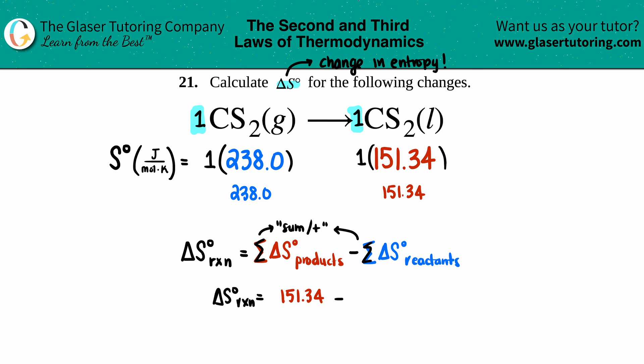...minus the reactants of 238.0. Let's see what we get. Delta S for the whole entire reaction is 151.34 minus 238. It's a negative value, which makes sense because you're going from very high entropy—a gas—to a lower entropy value, so it kind of makes sense that you're losing entropy.